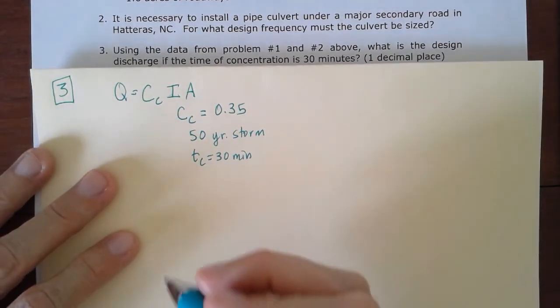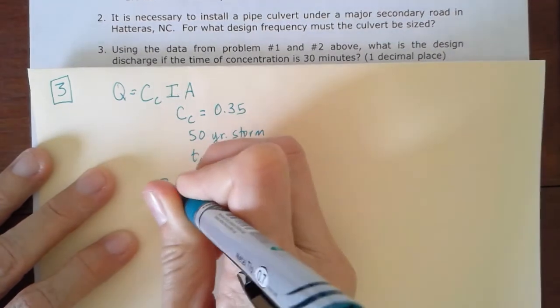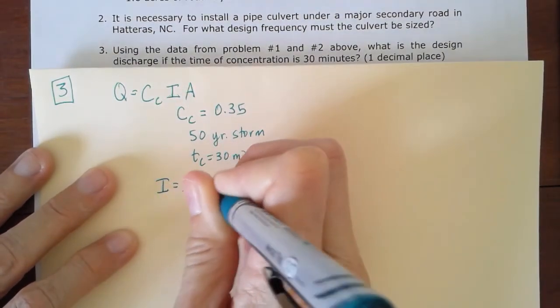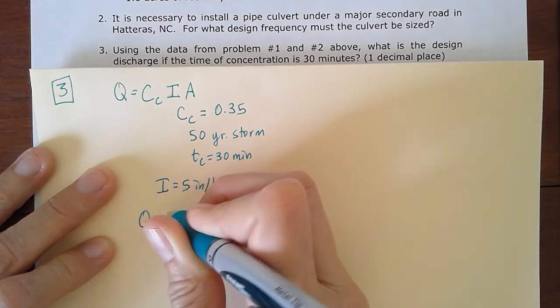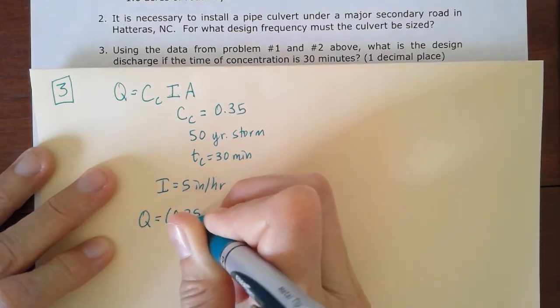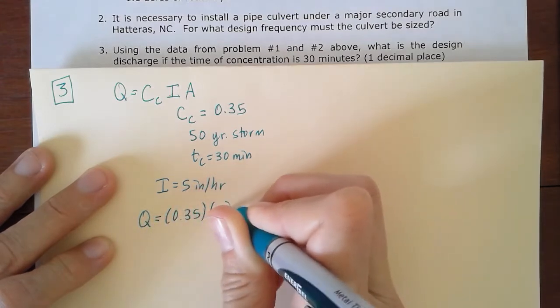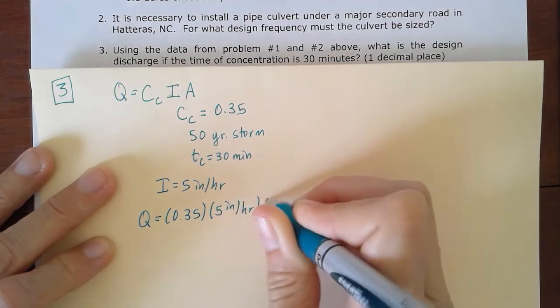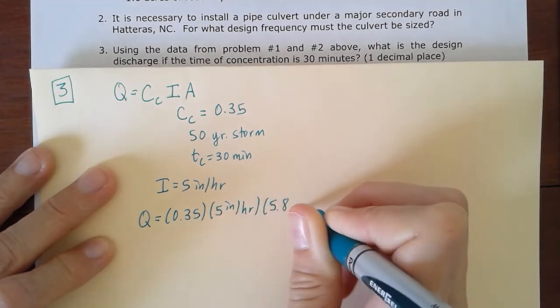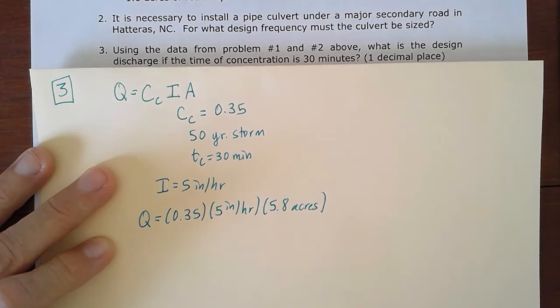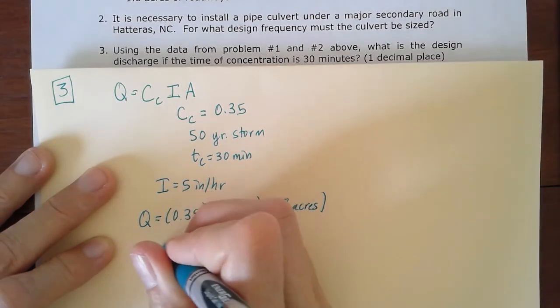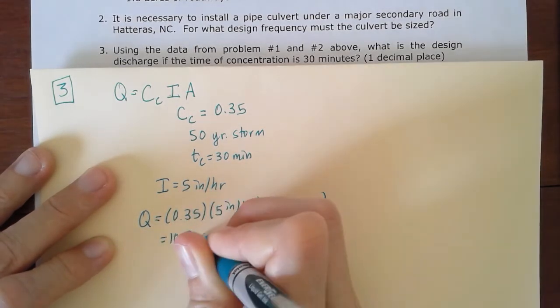So if you did use the intensity of five inches per hour, you would wind up with a Q equals 0.35 times the five inches per hour times the 5.8 acres. And to one decimal place for that solution, you would have 10.2 cubic feet per second.